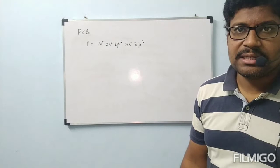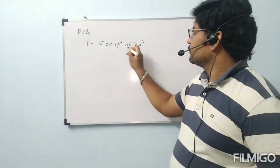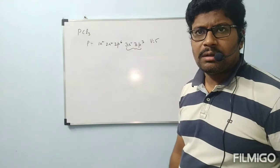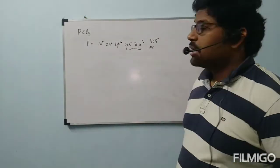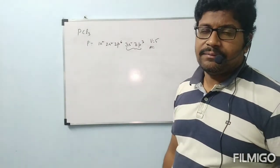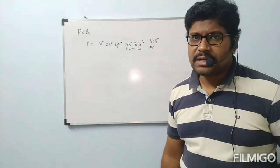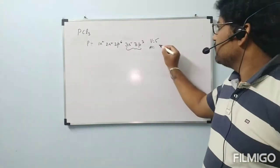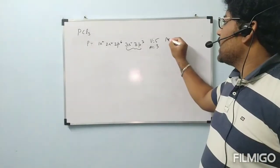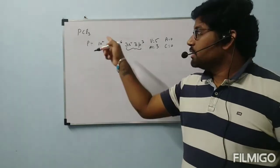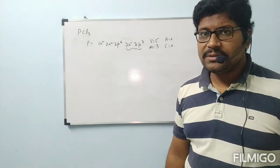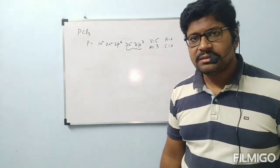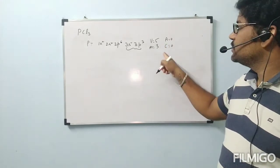The outermost shell of phosphorus is the third shell, which has 5 electrons, so V = 5. Chlorine is monovalent and 3 chlorine atoms are bonded to the central atom, so M = 3. The molecule PCl3 carries no charge, so both C = 0 and A = 0.